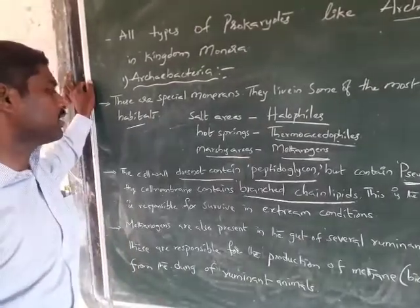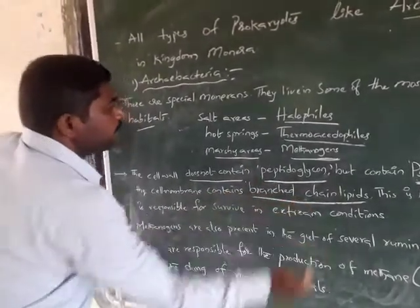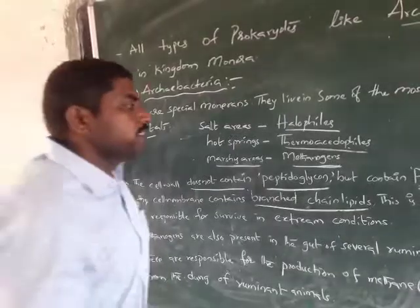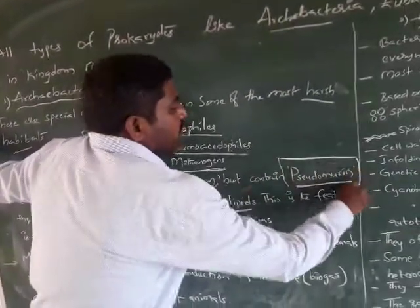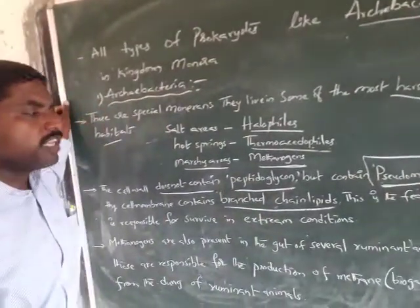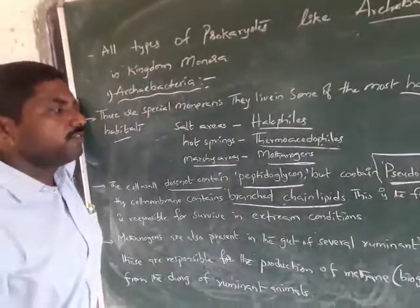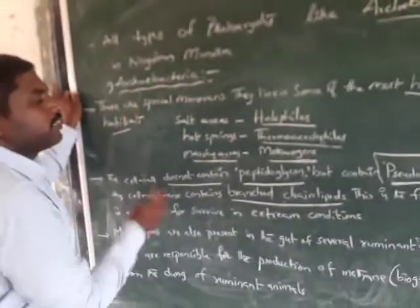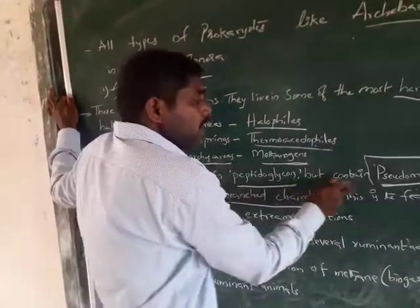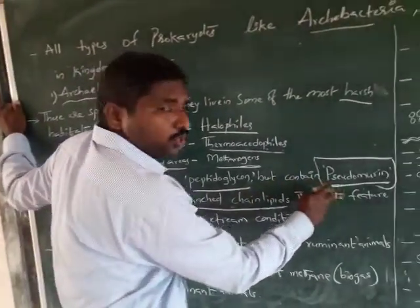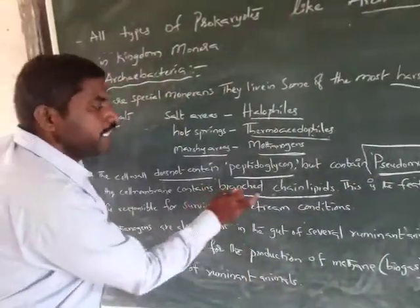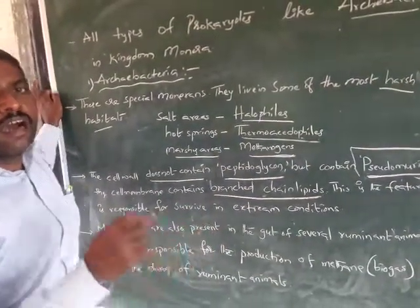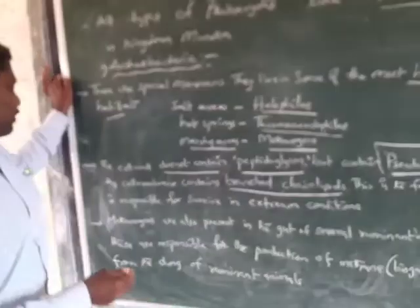The special features of archaebacteria are: the cell wall contains pseudomurine, and the cell membrane contains branched chain lipids. These are the most important features from an ancient evolutionary point of view, enabling survival in harsh habitats.